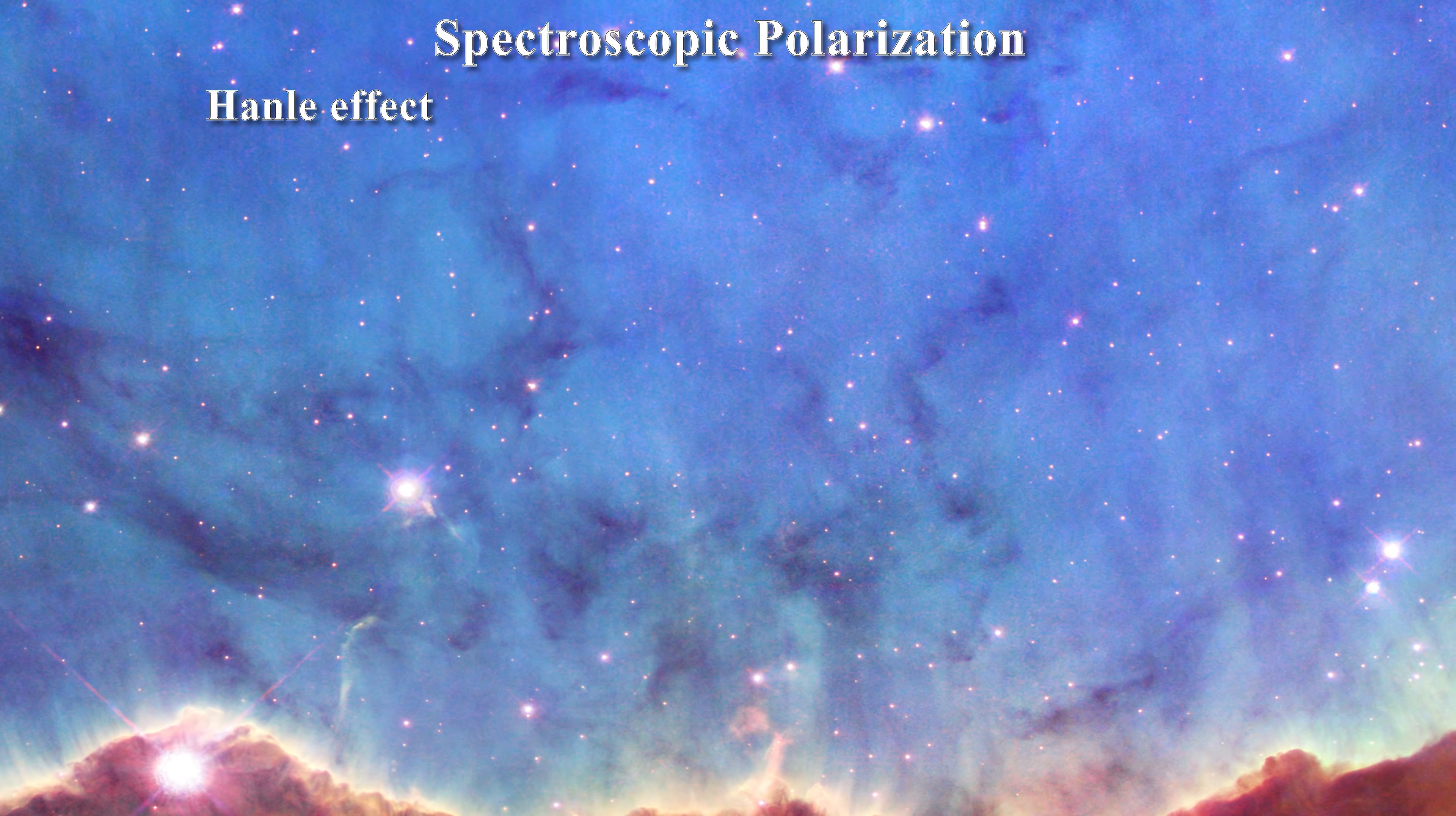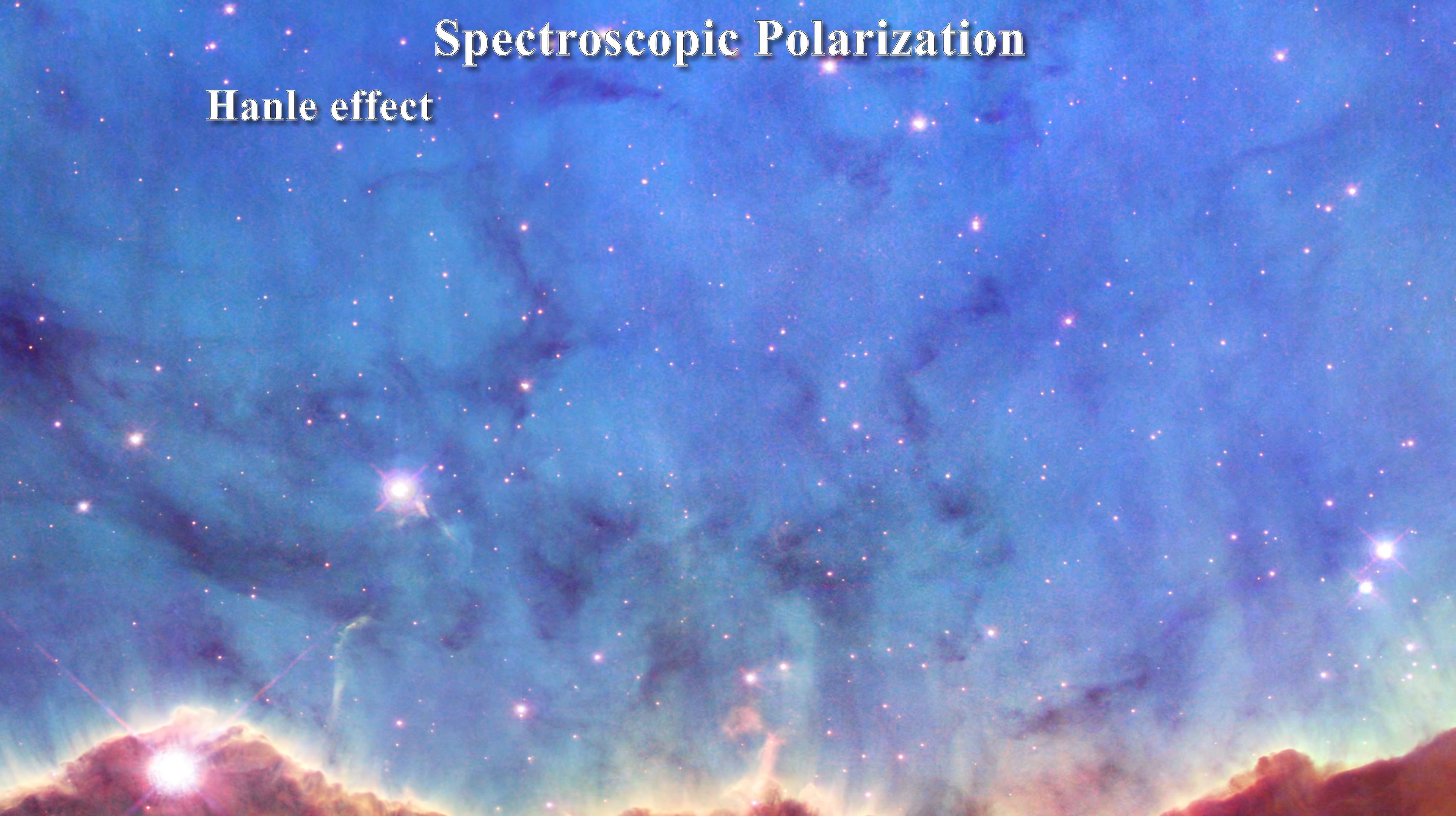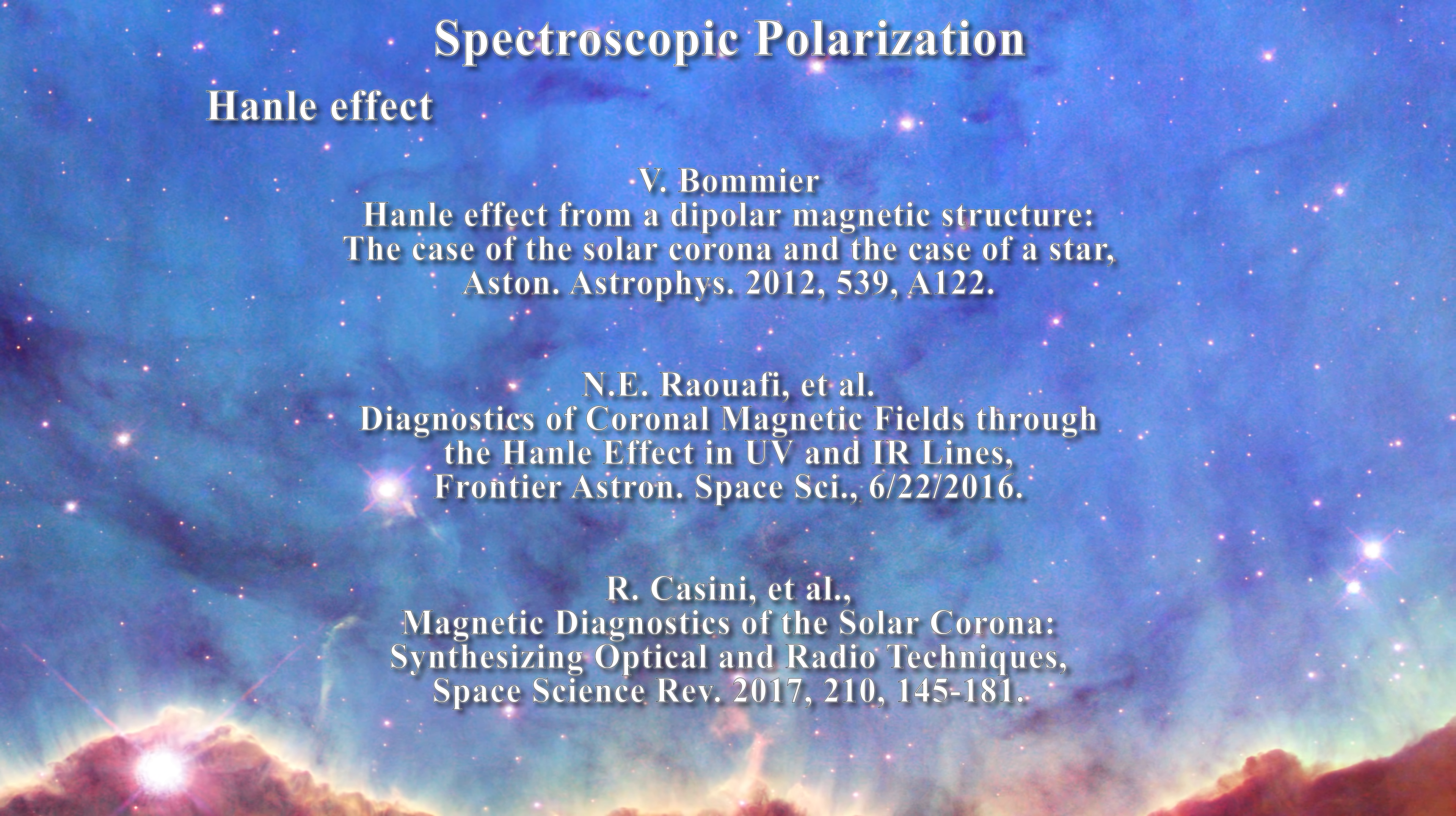Finally, in addition to all these effects, spectral lines can also exhibit polarization as a result of Hanle effects. This is a means of sampling weak magnetic fields which might be present in the chromosphere and corona, as one can learn in these papers.